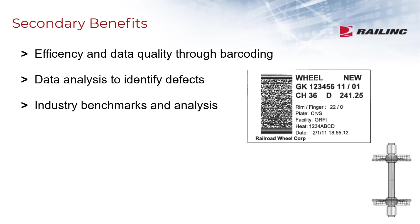Some of the secondary benefits include efficiency and data quality. This includes reduced data entry time by utilizing barcodes, and barcoding standards improve accuracy of data reporting. There is also a potential to automate data entry involved in billing for repairs. Another benefit is identifying defects — analysis of component data can identify trends that highlight an issue with the manufacture, assembly, or operation of a component. Additionally, data from components are valuable for creating benchmarking and analysis, such as the expected life of a wheelset in certain service or the mean time to failure once a wheelset begins to generate alerts.